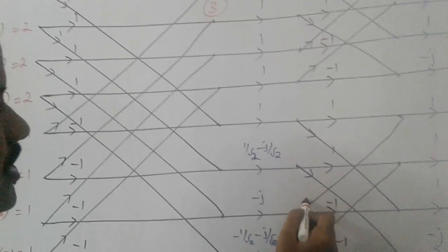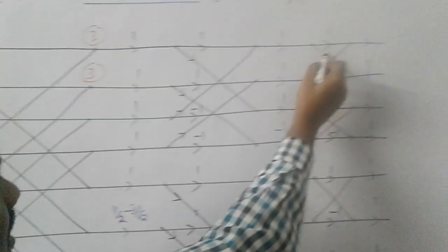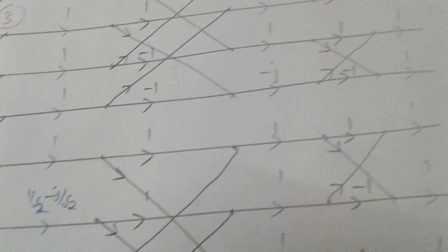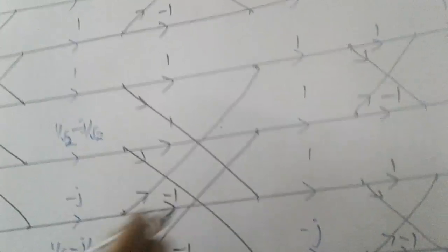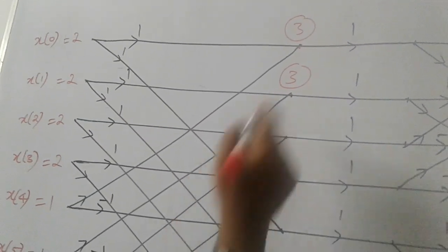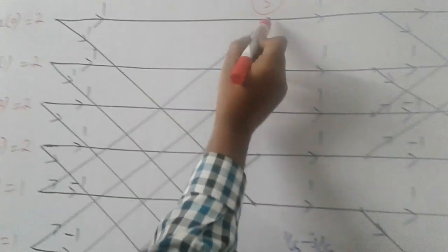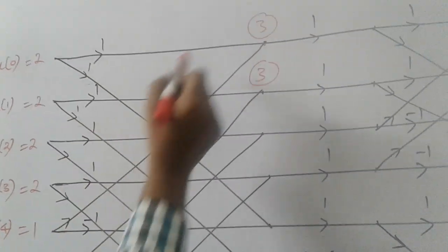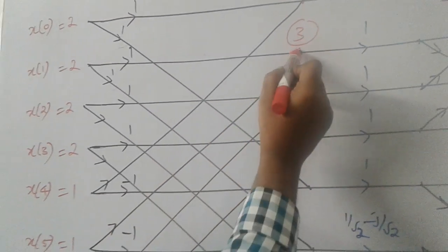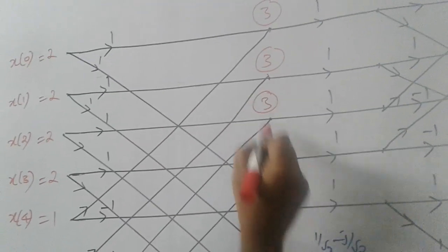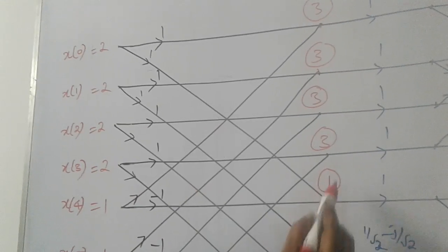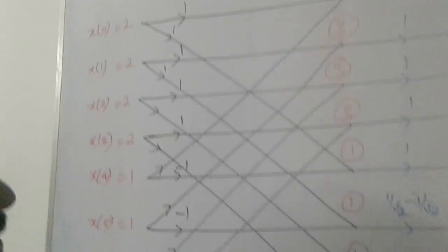Continuing the first stage: two arrow marks down, two arrow marks up, then one down and one up for the final groupings. This point is A1 minus B1: 2 minus 1 equals 1. And again 2 minus 1 equals 1. Those are the outputs of the first stage.